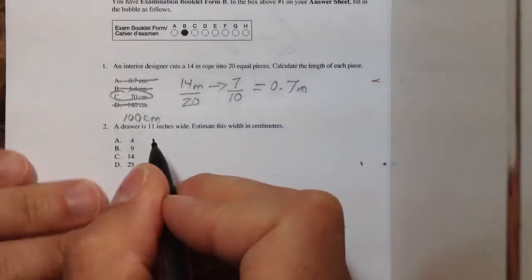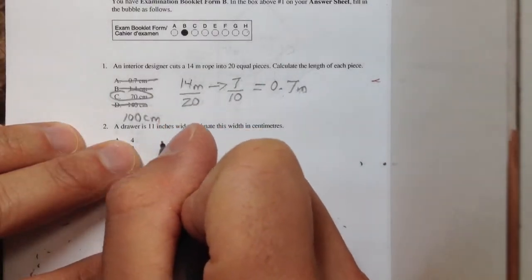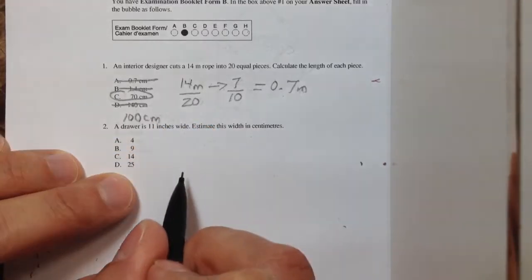Okay, this is number two. Number two, it says we have a drawer that's 11 inches wide, estimate it in centimeters.